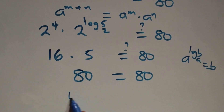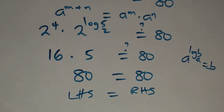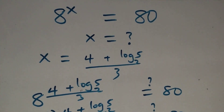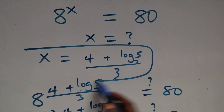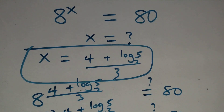Hence left-hand side equals right-hand side, and therefore we conclude that x = (4 + log₂5)/3 satisfies the given problem. Thank you for watching — don't forget to subscribe for more videos, turn the notification bell on, share this video, give it a thumbs up, and put your comments. See you next time, bye for now.